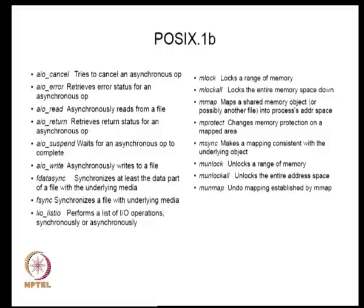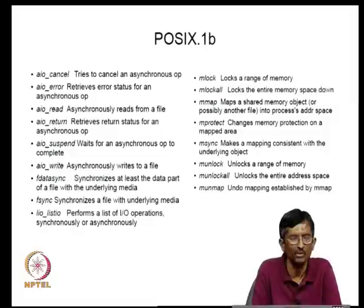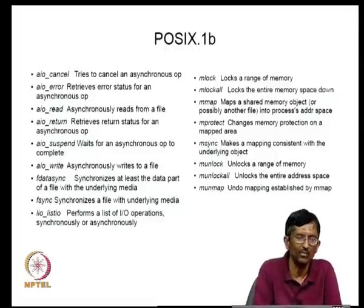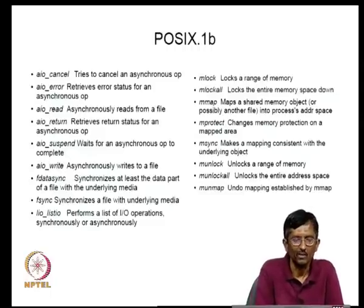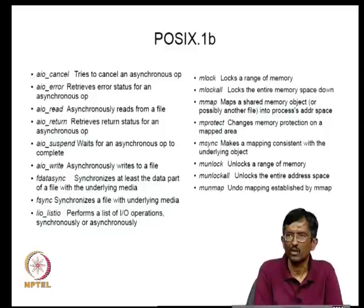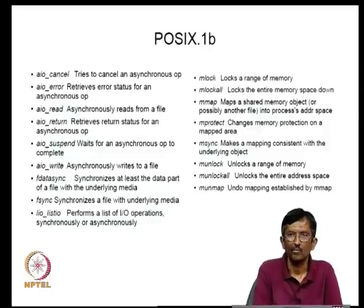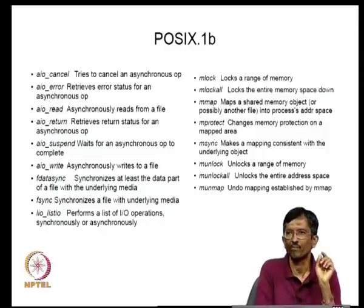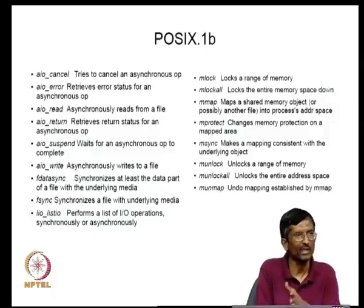Now let us look at POSIX 1B, which provides additional capabilities. Two main sets: asynchronous IO and memory region locking. For asynchronous IO, there are two ways to achieve parallelism: multiple threads each doing synchronous reads, or an asynchronous IO system where you initiate a request and continue doing other work while waiting.